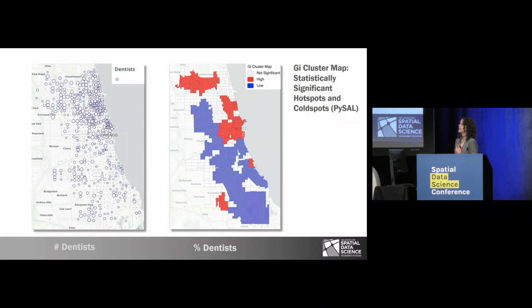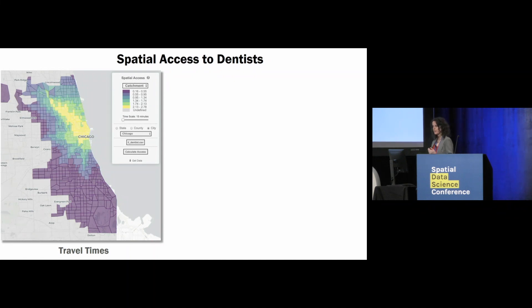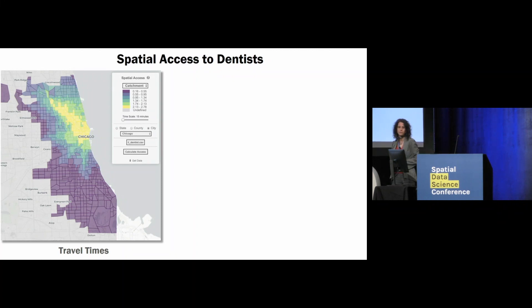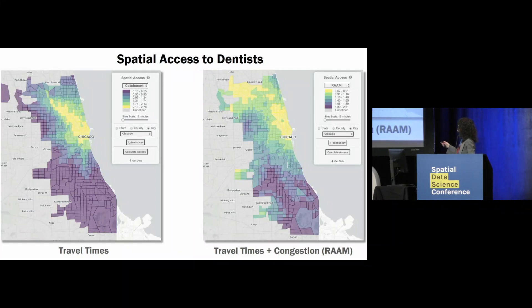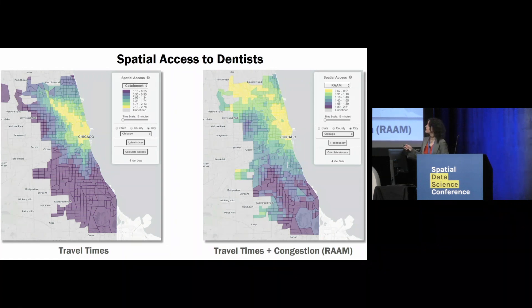Now let's take the dentist data as input for the regular travel time model that measures spatial access and compare that to what the RAM results would look like. In the travel time case, we're just inputting the dentist data and figuring out how long it takes to drive to dentists within 15 minutes. The area in yellow highlights the part of the city with the best spatial access to dentists. This ignores any population data, while in the RAM case, you're taking population and the congestion of services at the dentist's office into account as well. Better access is actually extended beyond the more narrow area found by the travel time-only model.